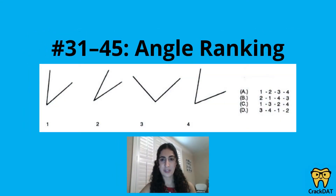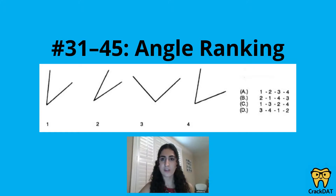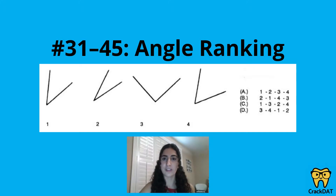Questions 31 through 45 are angle ranking. In this section, you'll be presented with different angles — which may be acute, obtuse, right, or anywhere in between — and it'll be your task to rank the angles from smallest to largest. This section really just tests whether you can pick up on small differences in angle size.